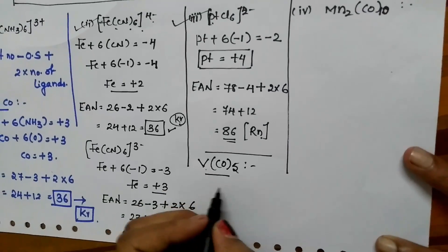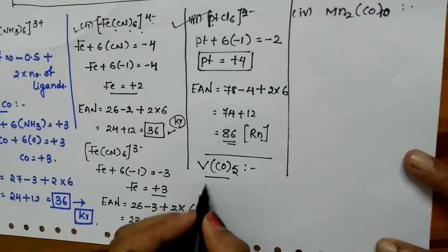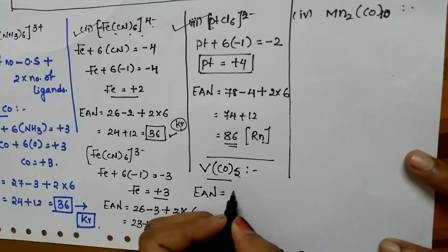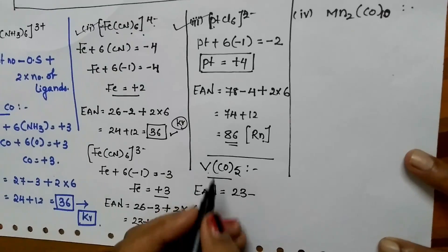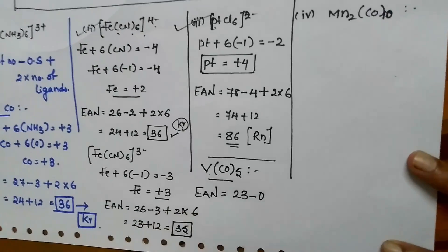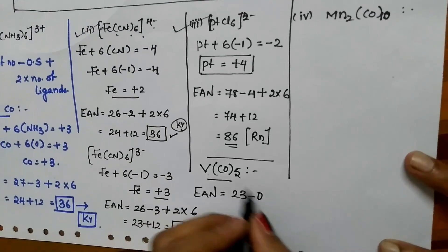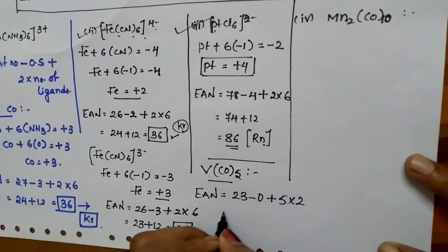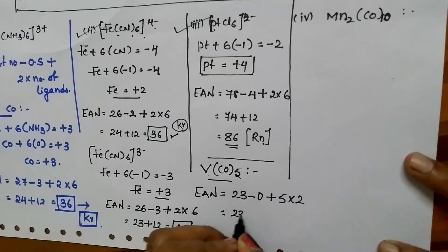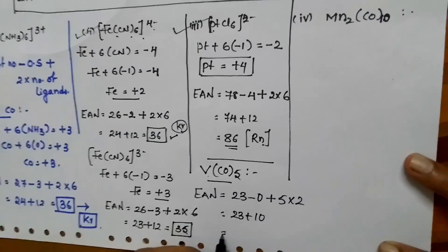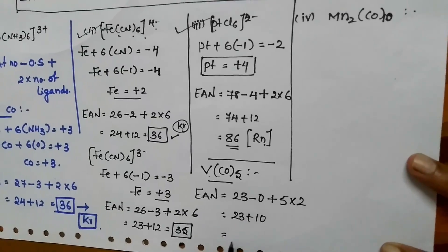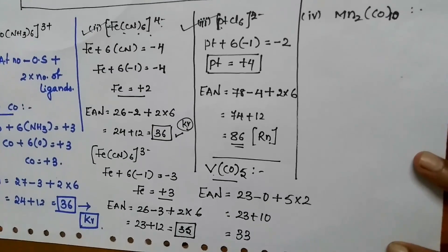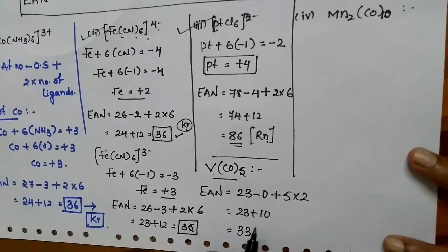Next, consider V(CO)5. Vanadium has atomic number 23. In metal carbonyls, the oxidation state of the metal ion is 0 because CO is a neutral ligand. EAN = 23 − 0 + 2×5 = 23 + 10 = 33. This is not the atomic number of any noble gas, so this complex is not stable according to the Sidgwick EAN theory.